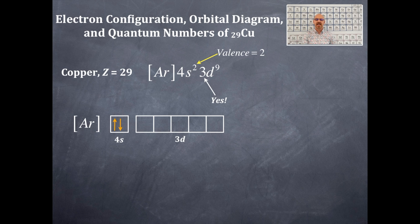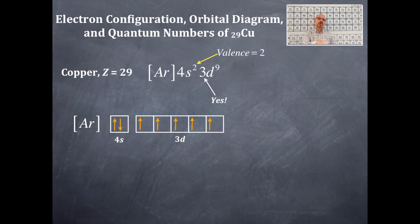Now we fill in the electrons. For the 4s: one up, one down — anti-parallel, filling that orbital. For the 3d, we place an up in each of the five boxes first — that's Hund's rule. Then we backfill starting from the far left box, adding the anti-parallel down spins: down, down, down, down. And now we're done.